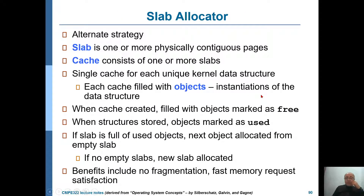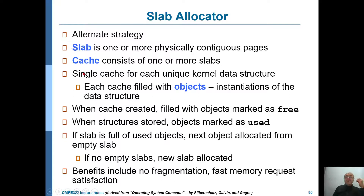An alternative is slab allocation. In the case of slab, we talk about a slab — which is one or more physically contiguous pages — and a cache, which consists of one or more slabs. The cache is actually designed for one specific type of data structure. For example, you have a cache for file objects or for any data structure you want to use. For each type, there is a separate cache. These objects are instantiations for that specific data structure type.